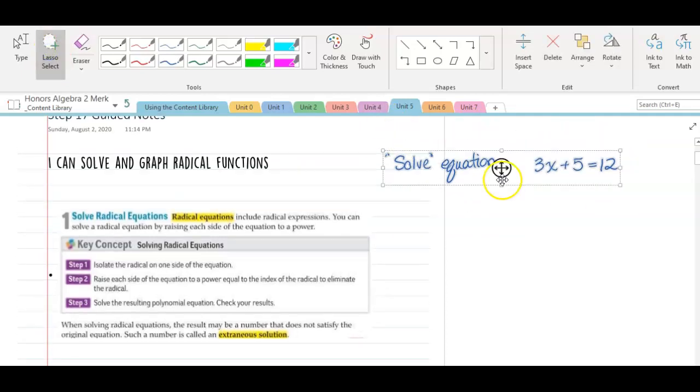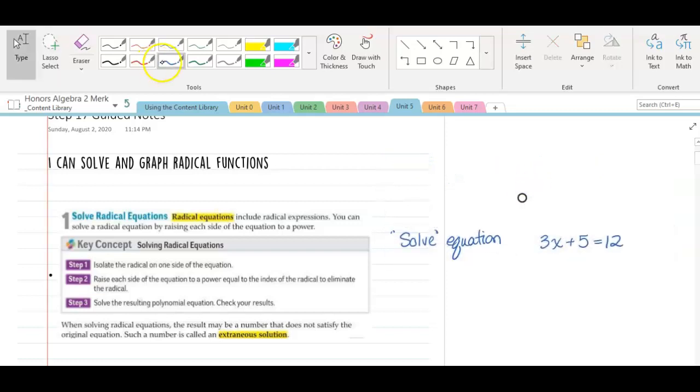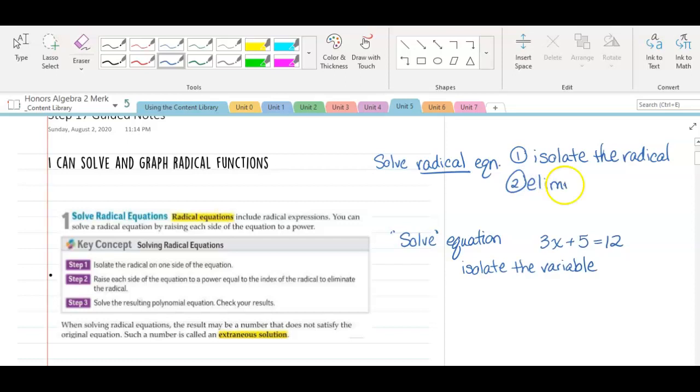Today we're going to talk about solving a radical equation. The big difference is we have to do a few things before we can solve for x. When we solve an equation, we isolate the variable. When we solve a radical equation, we want to first isolate the radical. We then need to eliminate the radical. And then finally, we will be able to isolate the variable. That's our end goal. Our goal, whenever you see the word solve, is always to get the variable by itself.